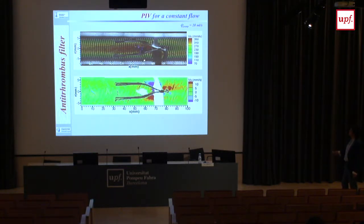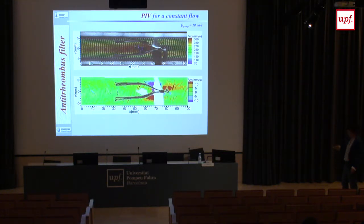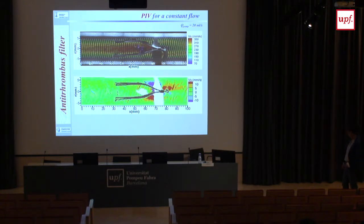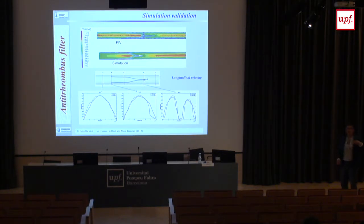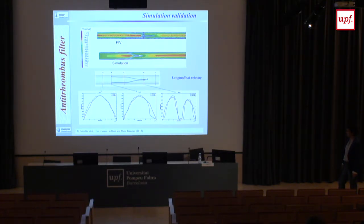Here the vertical velocity component is shown in color — without the filter, vertical velocity was null and everything was horizontal. But because of the filter the flow goes down and then back up, visible in the vectors and plotted as iso-contours of the vertical velocity component. Marina Nicolas, who is working with you now, was doing her PhD on simulation and used our data for comparison. This is what we measured, what she simulated, and the comparison between simulation and experimental data.